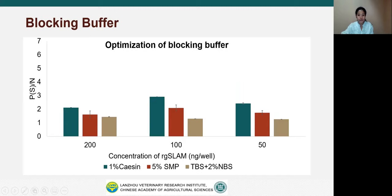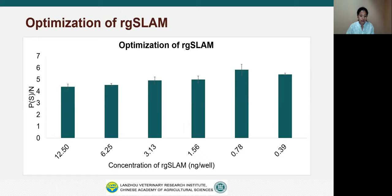As for the blocking buffer, we used 5% skim milk powder, 1% casein and TBS plus 2% NBS. Results showed that 1% casein gave higher OD values than the other blocking buffers — 5% skim milk and TBS plus 2% NBS. Therefore, we chose 1% casein as the blocking buffer for this assay.